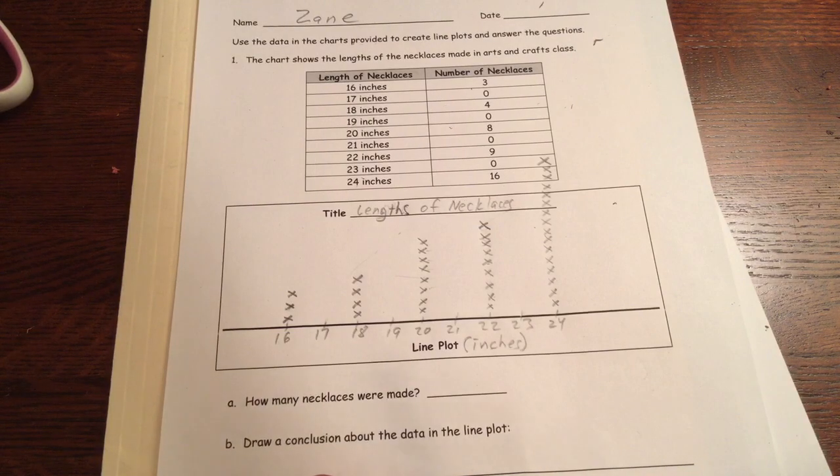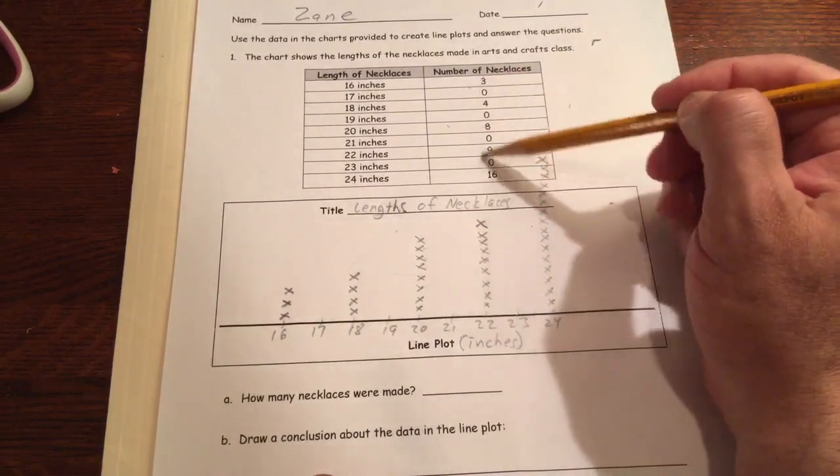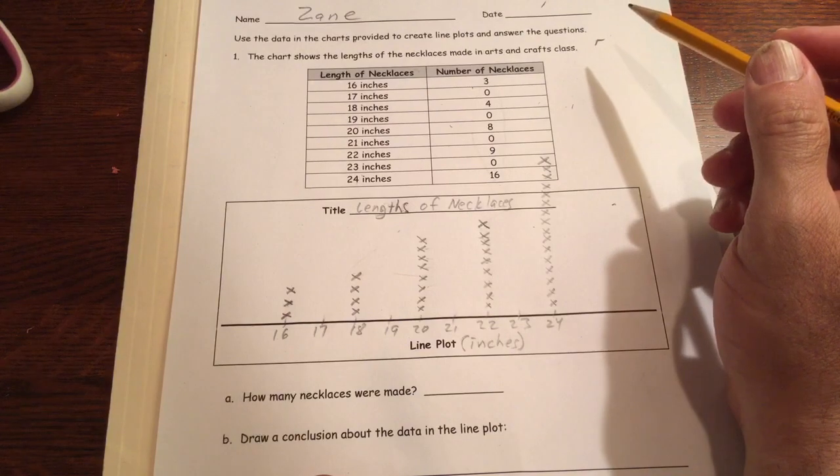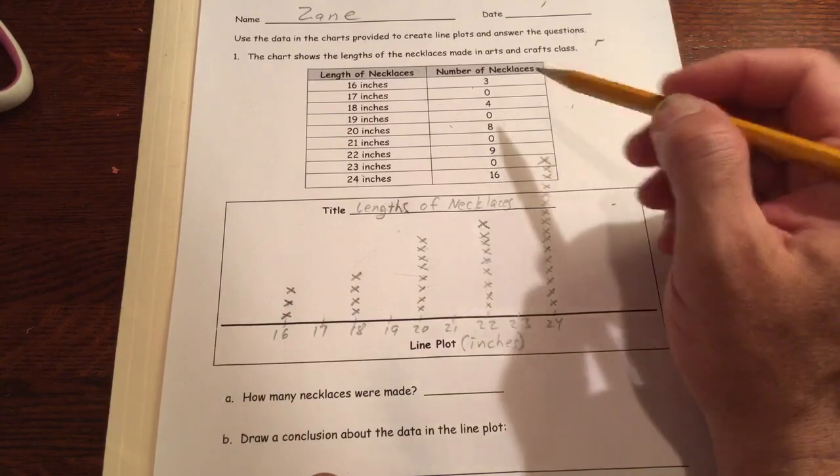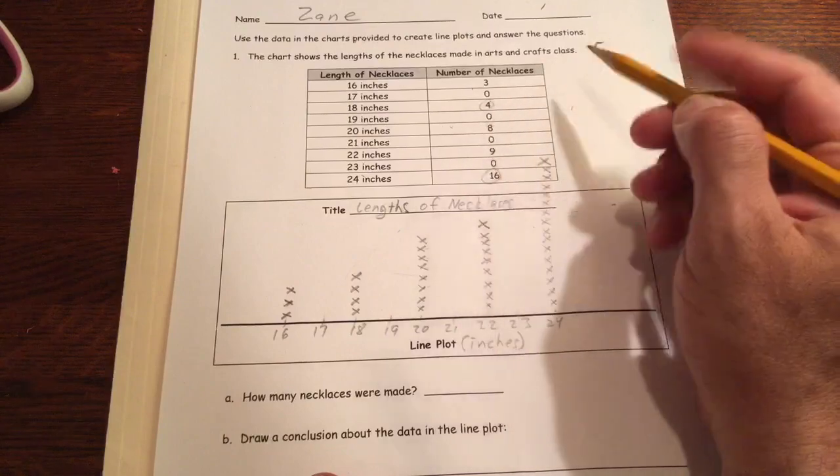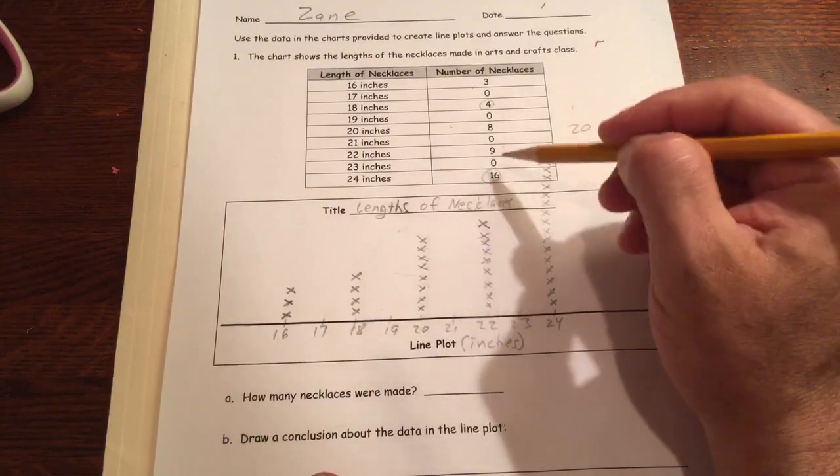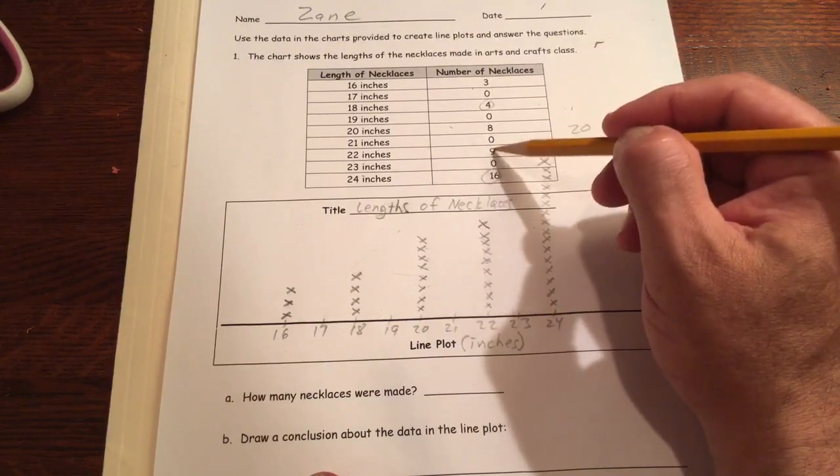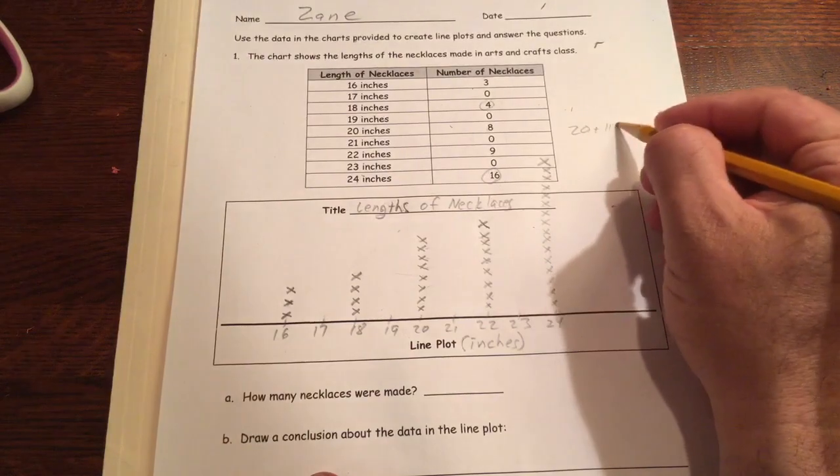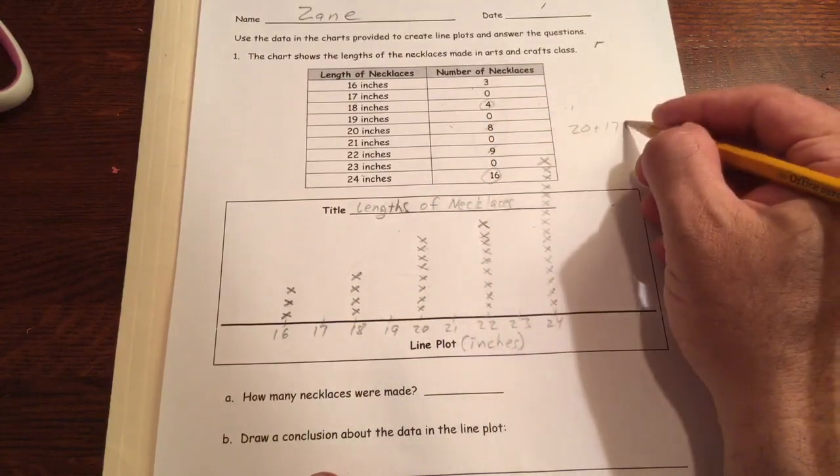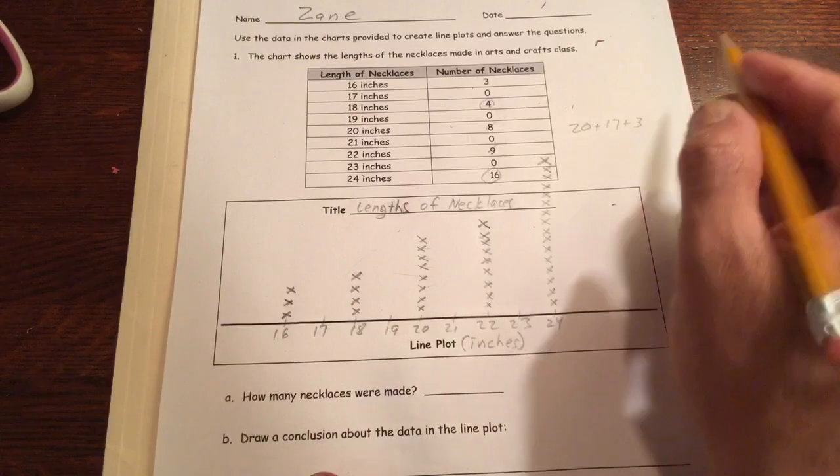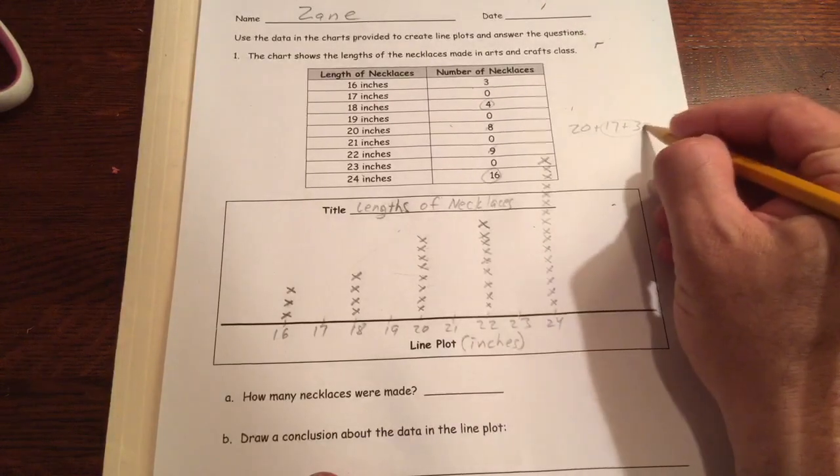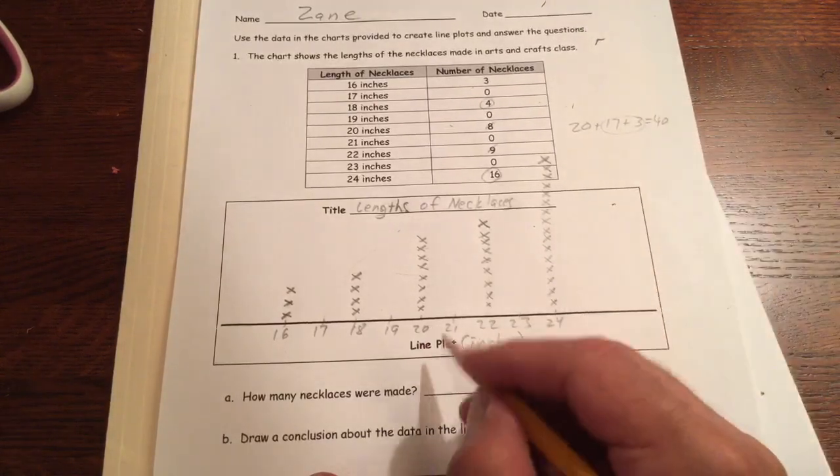How many necklaces were made? Well, we can just add up all these numbers, or we can just count all the x's, one or the other. But I'm looking for some ways to make 10 here. And I see 16 and 4, that's 20. And I see an 8, an 8, and a 9, which is 17. And that's a 3, that's going to make another 20. So that's a 20, 20, and then 20 and 20. There's going to be 40 necklaces.